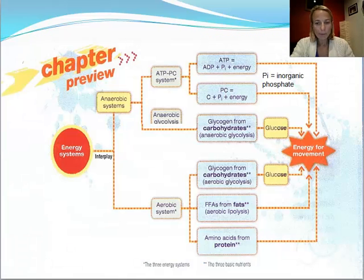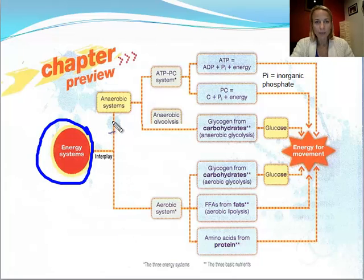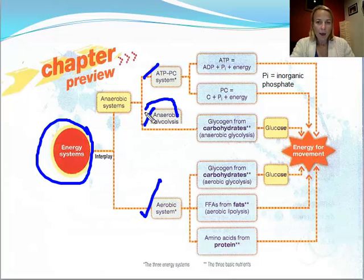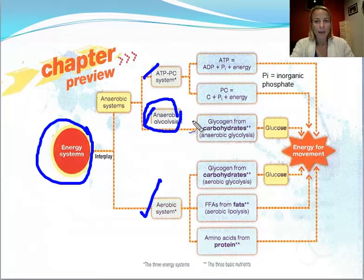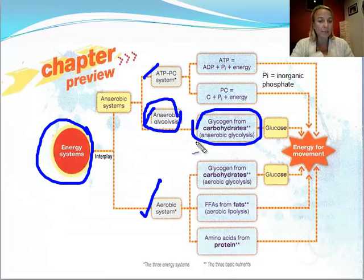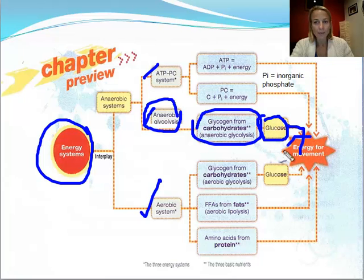Looking at the big picture: to produce energy, yes, we use all three — ATP-CP, anaerobic glycolysis, and aerobic. The anaerobic glycolysis energy system's only fuel source is carbohydrate. It uses carbohydrates to produce energy, breaking them down into glucose to give us energy.